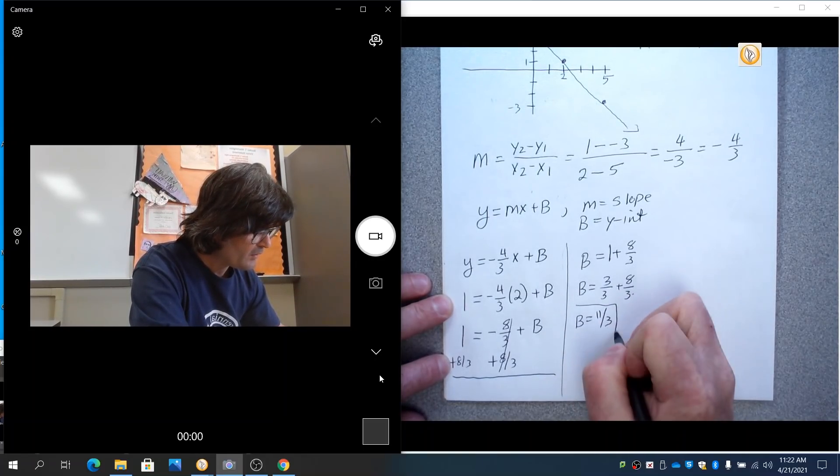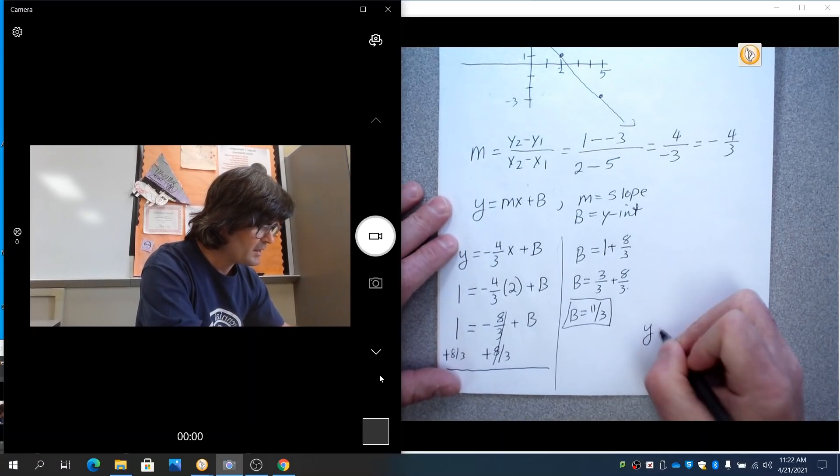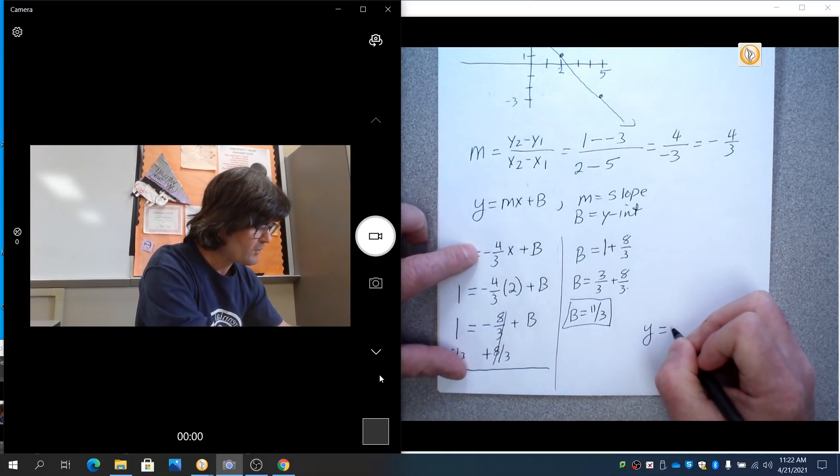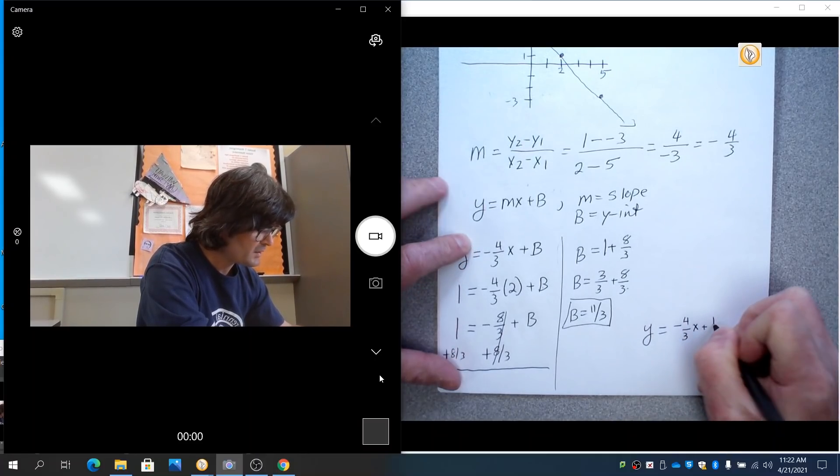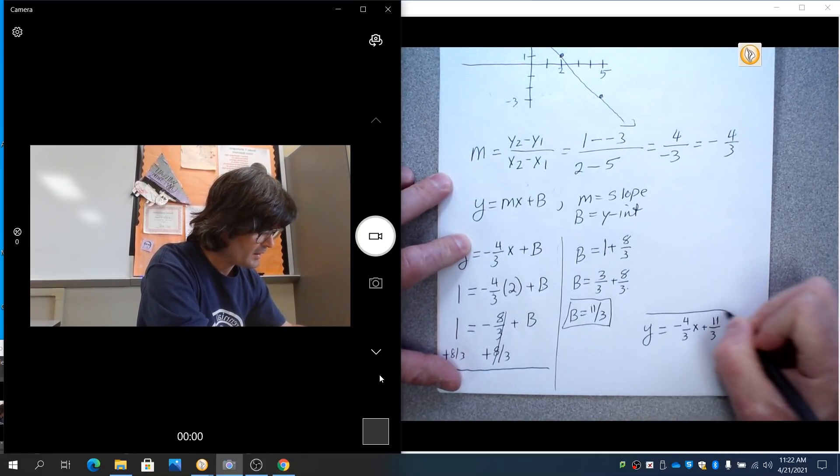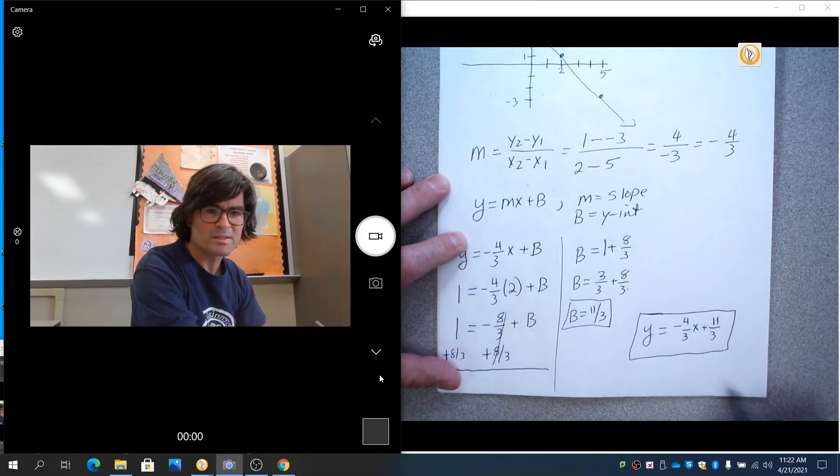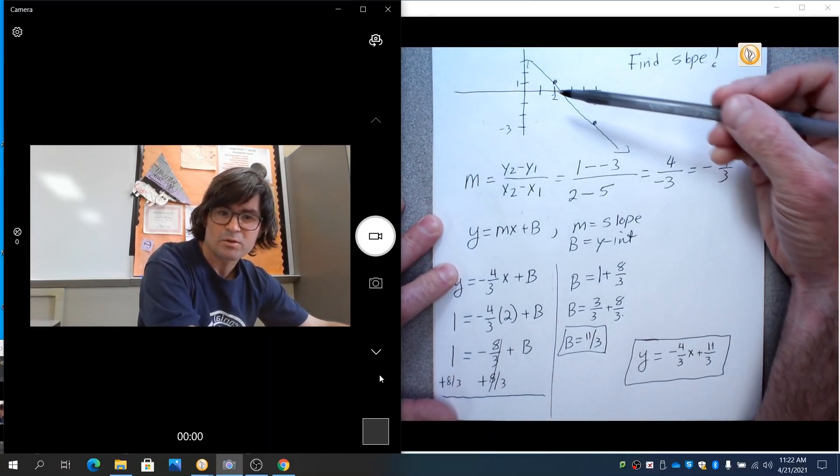And we can now finish my equation. Y is, we had minus 4 thirds X and now plus 11 thirds. That is my linear equation that represents this line that I kind of tried to draw.